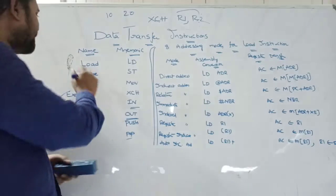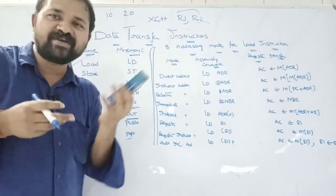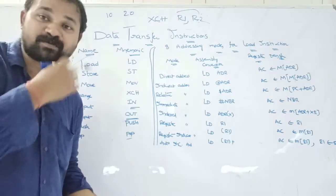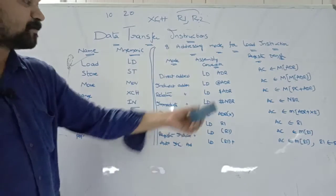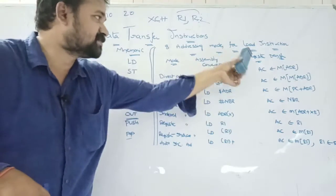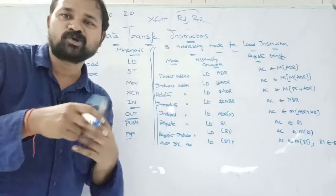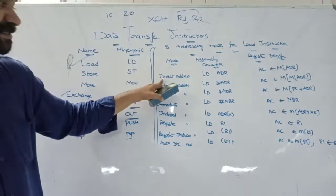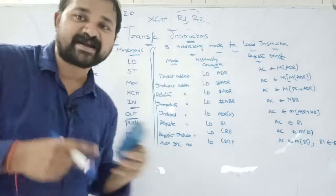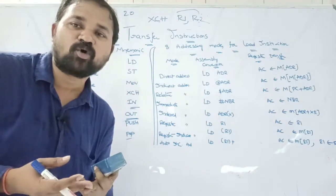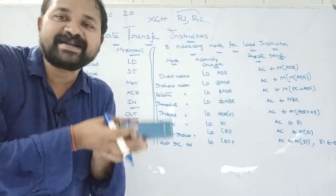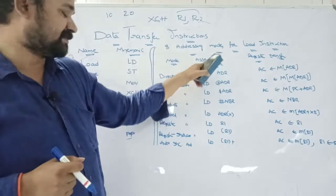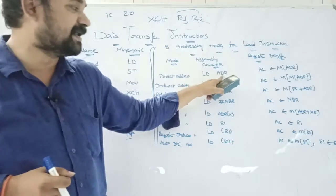Let's see 8 addressing modes for the load instruction. The first is direct addressing mode. Direct addressing mode means the instruction contains an address, and that address contains the operand. In assembly convention it is represented as 'LD ADR'. So if the address is 100 and the operand at that location is 10, then 10 will be loaded into the accumulator.